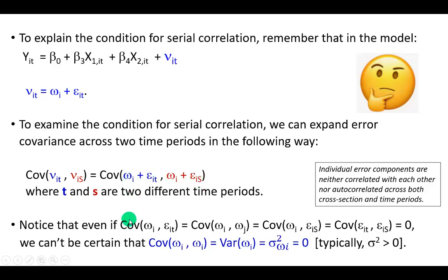And notice that even if these covariances here all amount to zero, even if individual error components are neither correlated with each other nor autocorrelated across both cross-section and time periods, we can't be certain that covariance between the blue omega term and the red omega term in the two different time periods is zero.